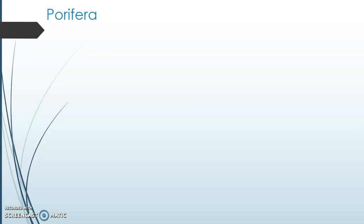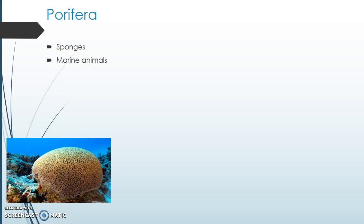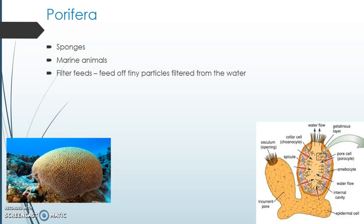I'm going to start at the simple end of the scale. Simple animals don't have highly organised structures like us humans do — they just have a very basic structure, such as Porifera. Porifera are sea sponges, and they're marine, found in the ocean. You can see that this brain sponge is living under the ocean. They feed by filtering out tiny little particles from the water, which means they're filter feeders. Here's a diagram that shows how that happens.